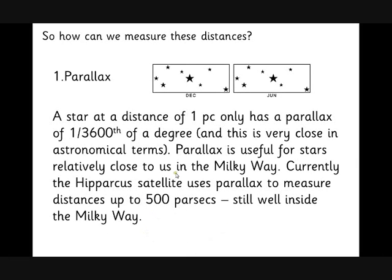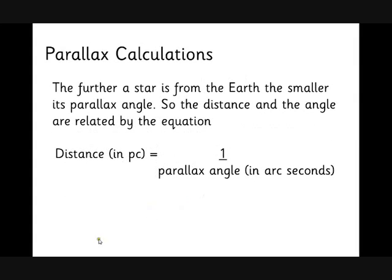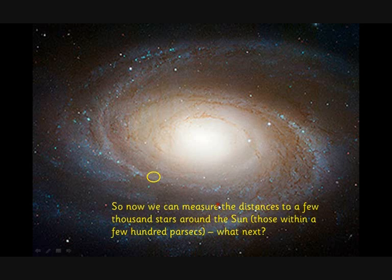It's important to realize that as you get further away, the parallax gets smaller and smaller. The relationship between the distance in parsecs is 1 over the parallax angle in arc seconds. This will always be less than one second of arc if you're looking at a star. If it was half a second of arc it would be two parsecs away. If it was a tenth of a second of arc it would be ten parsecs away.